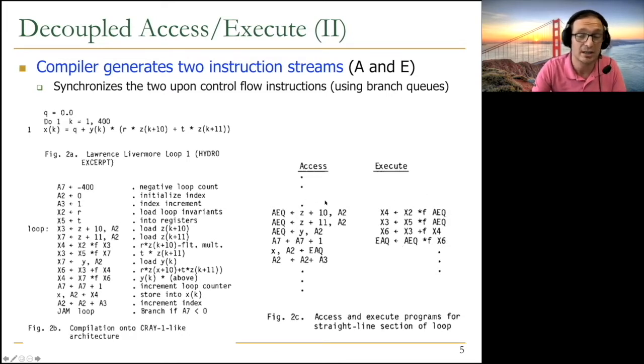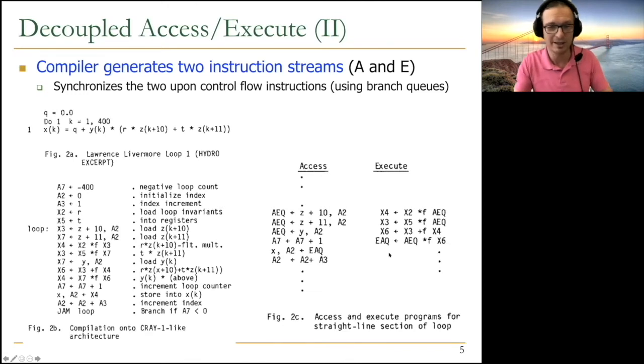And whenever you need to communicate a memory access result to the execute processor, you need to put it to access to execute queue. You can see these memory accesses go to that queue. And you can see that the execute engine takes from that queue and could put the results into execute to access queue. So communication happens through these queues. You can take a look at it if you're interested in more detail.